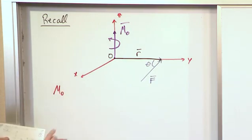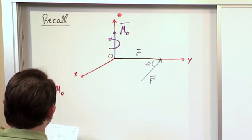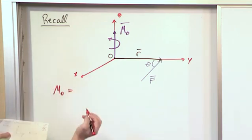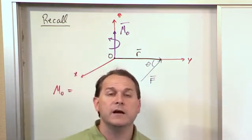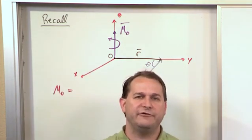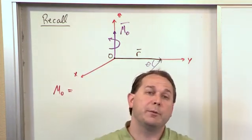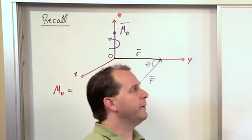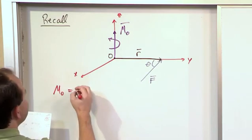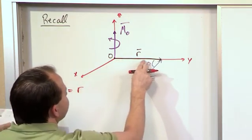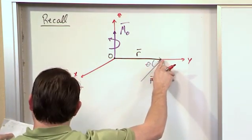Remember that the moment about the origin, or at least its magnitude, is F times d. But we've said many times it's not just F, it's the component of F perpendicular to the moment arm.